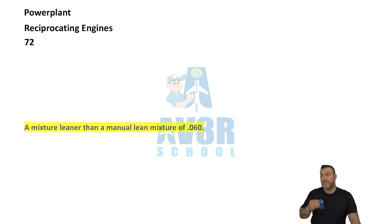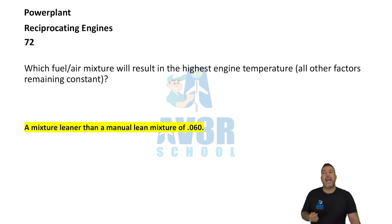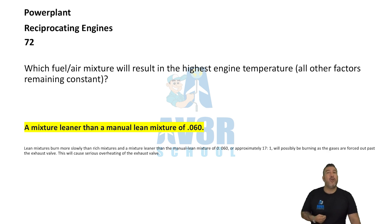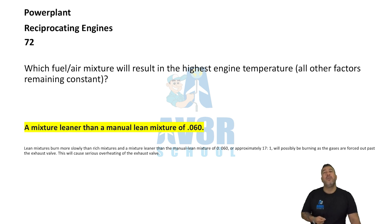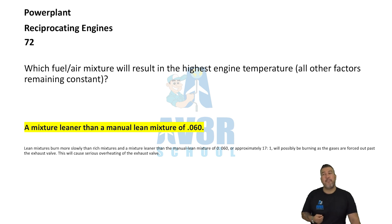Number 72: a mixture leaner than a manual lean mixture of 0.060. Which fuel-air mixture will result in the highest engine temperature, all other factors remaining constant? A mixture leaner than a manual lean mixture of 0.060.